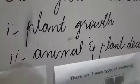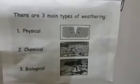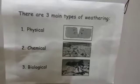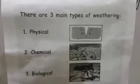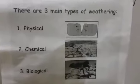Next one is chemical weathering. Chemical weathering means the breaking down of rocks and changing their properties through the use of chemicals. When we use different kinds of chemicals for breaking down the rocks, this is known as chemical weathering.